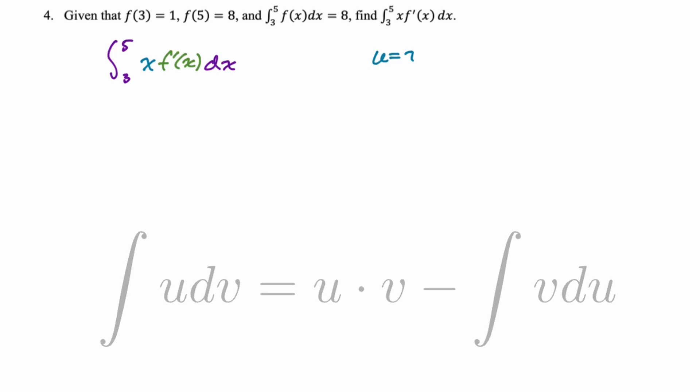Integration by parts, I think, is the only way to go. So u is going to be x. dv will be f prime of x dx. Crucially, we can integrate f prime of x dx. We don't even need to know what f is. So du is dx. v is just going to be f of x. So now we just write down our integration by parts. It's going to be u, v, so x, f of x. And we're evaluating that from 3 to 5, fundamental theorem.